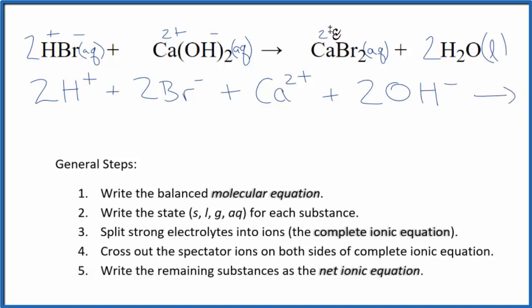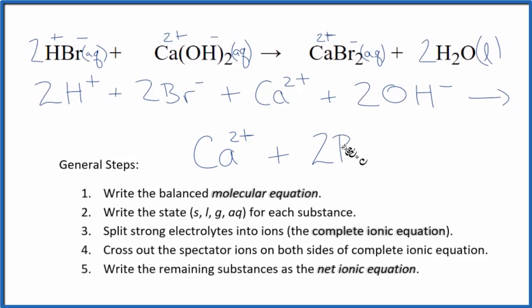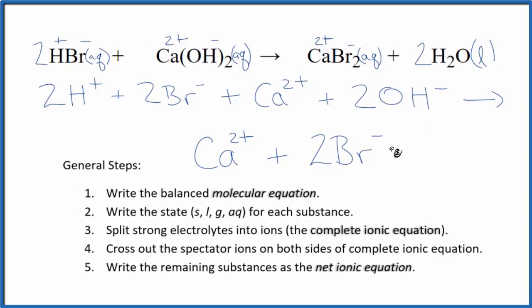We said calcium was 2 plus, the bromide ion, that'll be 1 minus. So in the products, we have Ca²⁺, plus the bromide ion, and we have 2 of those. And then we have 2 water molecules.